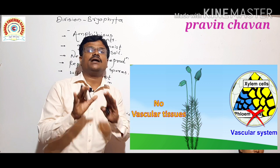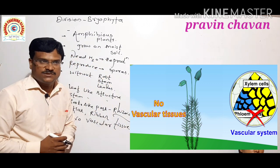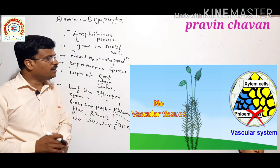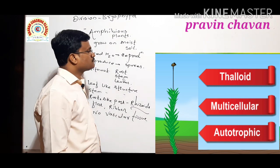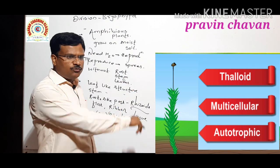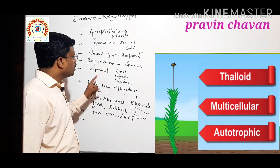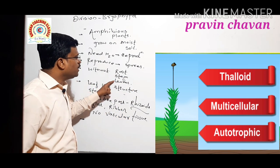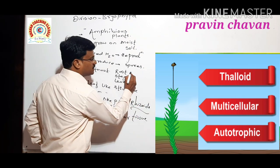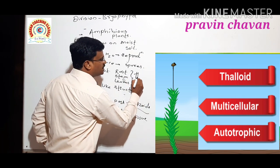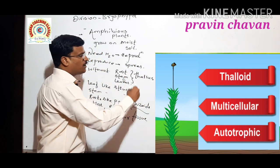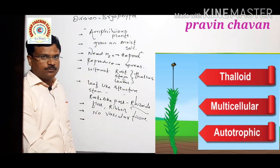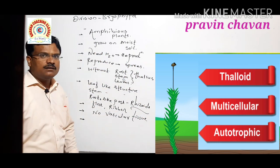Xylem and phloem are absent. The plants belonging to Bryophyta are without roots, stem, and leaves — that is why they are called a thallus plant body, or thalloid plant body.